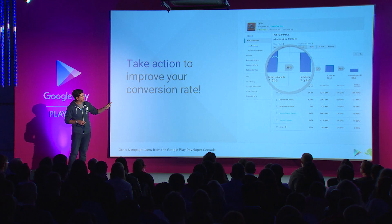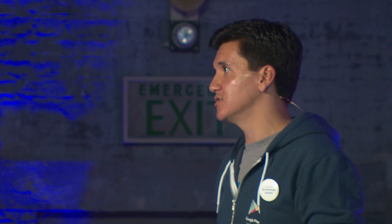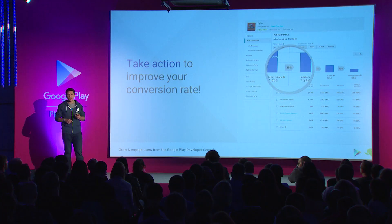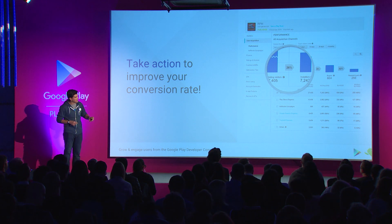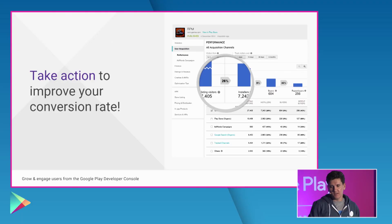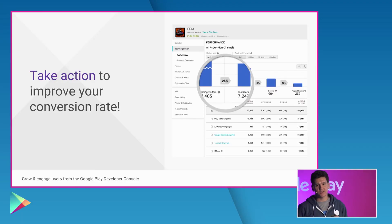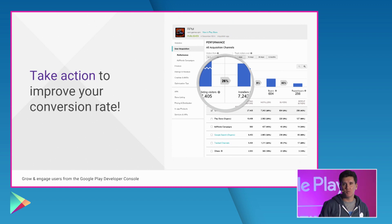With one click, you can see what search keywords people use on Google Search before installing your app, providing you the insight you need to optimize your store listing page. You'll also be interested in the tracked channels breakdown. If you use UTM tags on your Play Store links, you'll be able to segment your users coming from your mobile website or other partners.